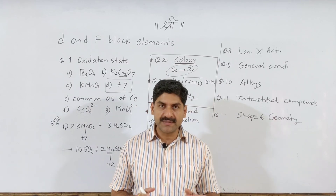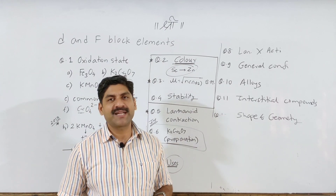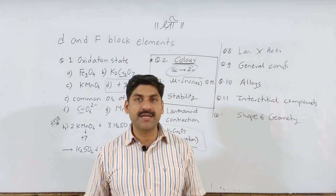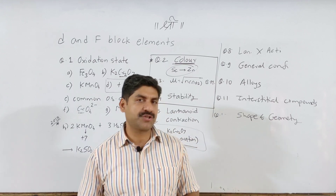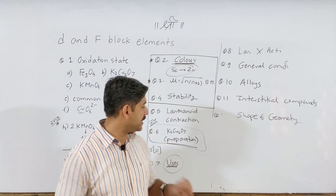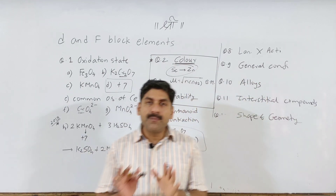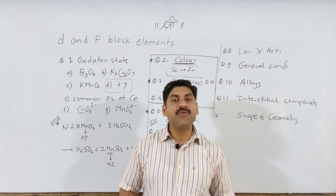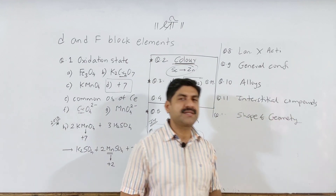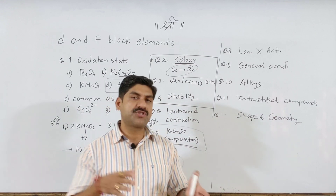The next topic is the preparation of K2Cr2O7. You should do this in the next video. The key step is converting sodium dichromate to potassium dichromate using H2SO4. Also cover lanthanide and actinide differences, the 3d and 4d series, general electronic configuration, interstitial compounds, and the shapes and geometry of chromate, dichromate (tetrahedral), manganate, and permanganate — including their charges. Make sure you do everything perfectly.